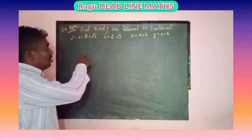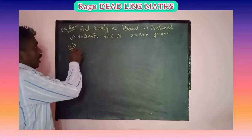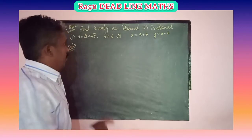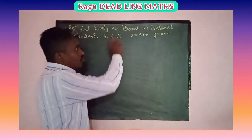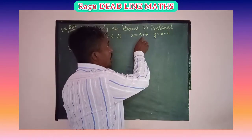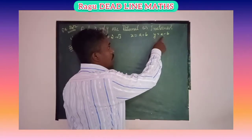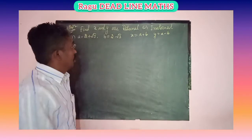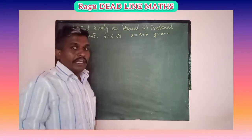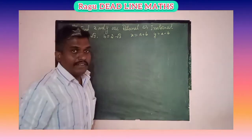There are four questions. In the first question, if a is equal to 2 plus root 3 and b is equal to 2 minus root 3, and if x is equal to a plus b and y is equal to a minus b, then find whether x and y are rational or irrational.